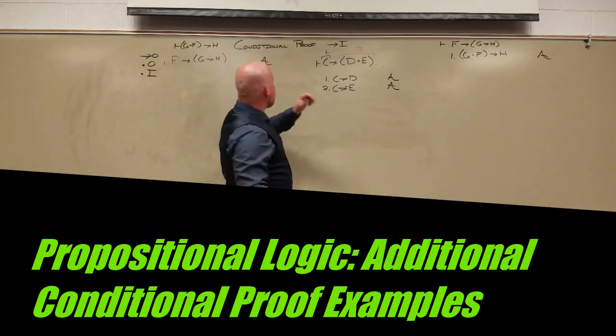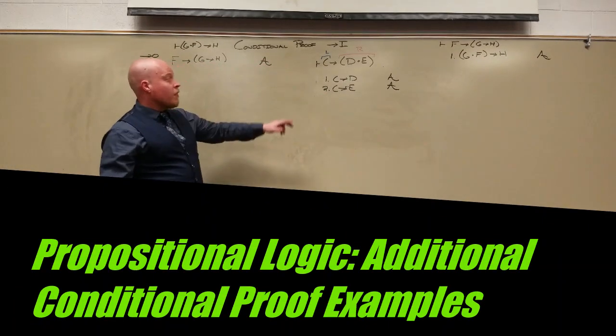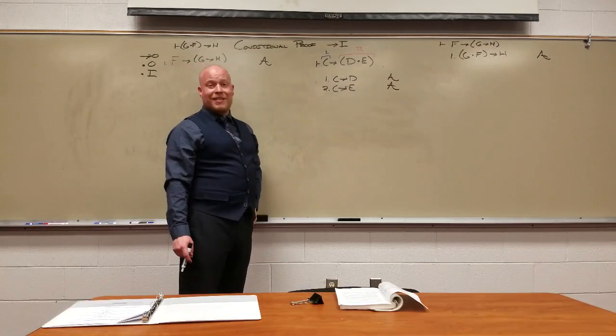All right, so now with regard to conditional proofs, let's try this problem on the right. We've got these two assumptions. We're going to try and get C arrow D and E.